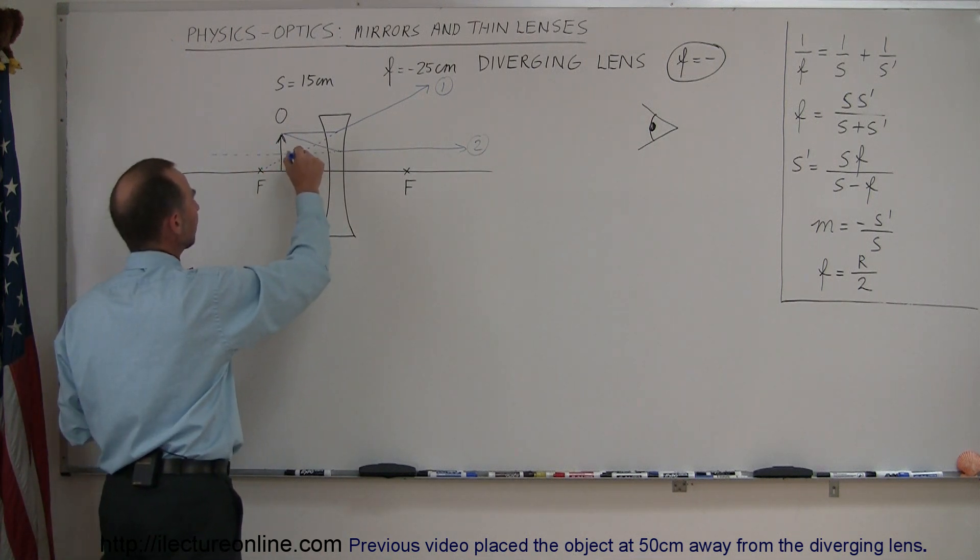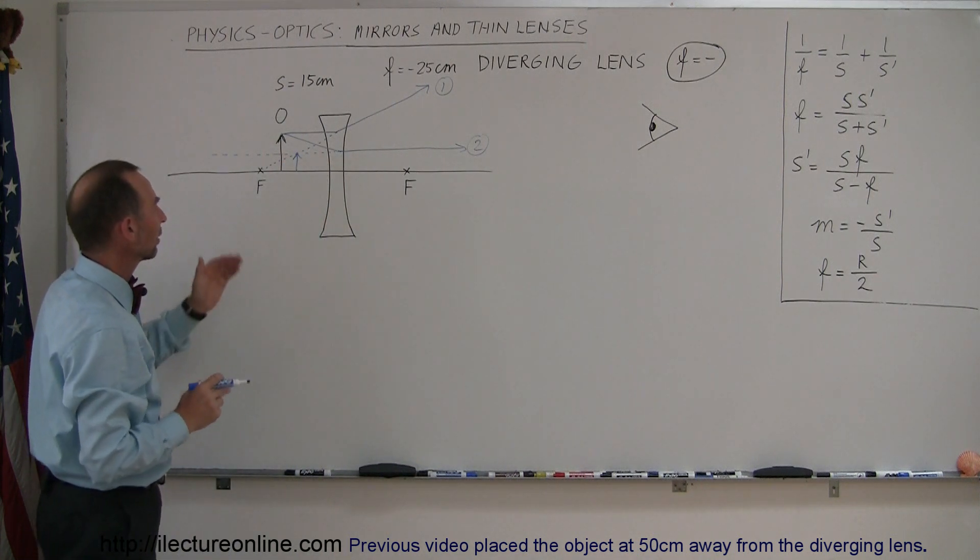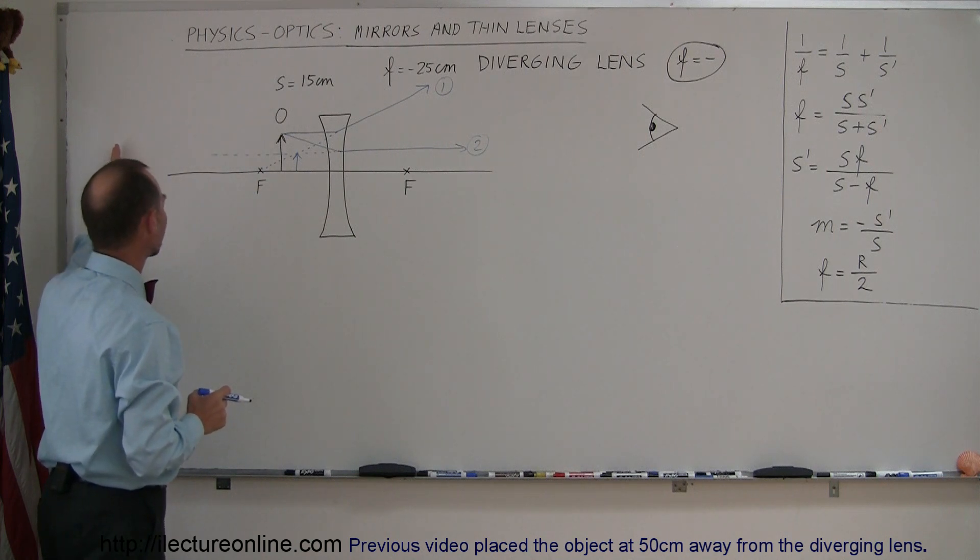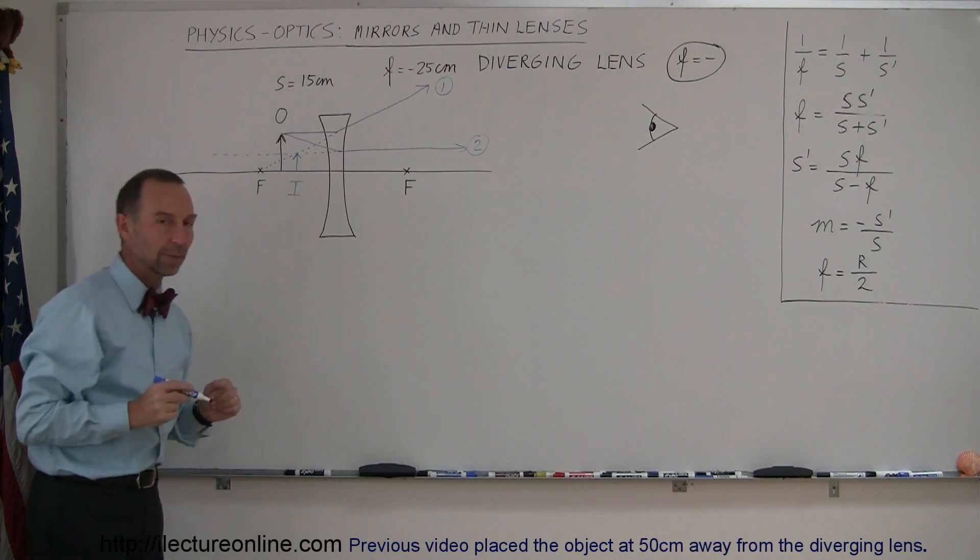The image is right here, and you can see that it really makes no difference with a diverging lens. If we put the object inside the focal point, or put the object outside the focal point, the image will appear somewhere between the object and the lens. There's our image.